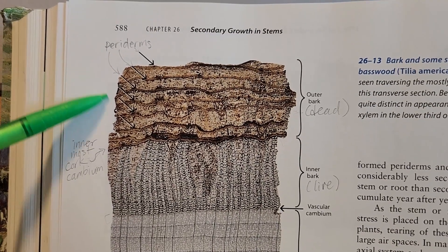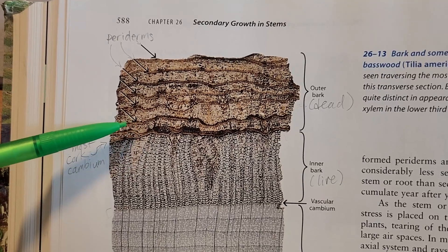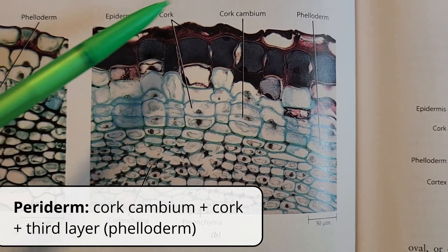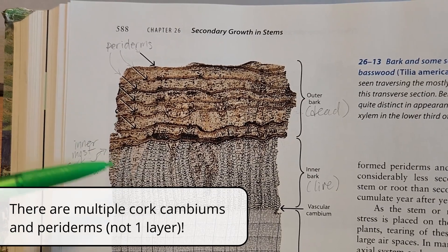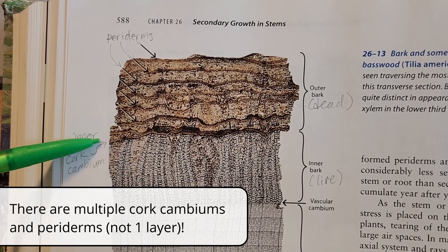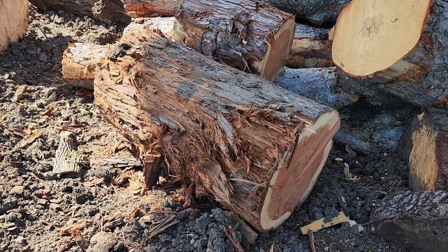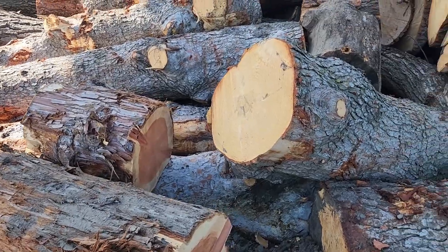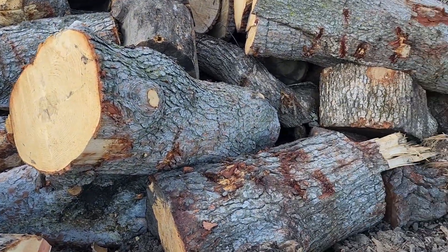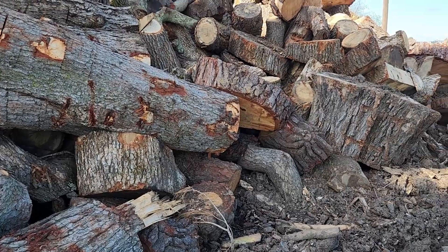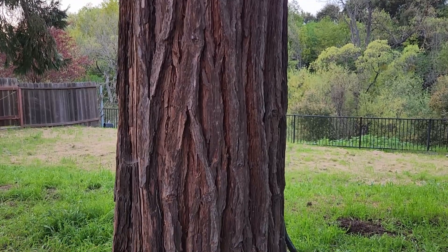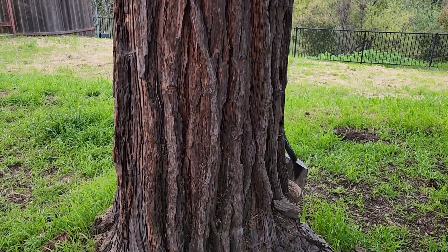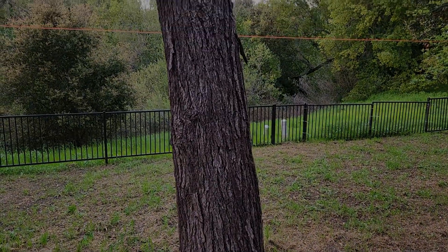A tree can have multiple cork cambiums, but only the innermost cork cambium is alive. A single cork cambium, the cork layers it makes, and some other layers make up what's called a periderm. So you will also have multiple periderms, each of which have formed from a separate cork cambium. The texture of the surface of the bark is determined by how the individual periderms are laid down — if they're laid down in overlapping layers, you get more of a scaly or flaky appearance. Bark appearance can be consistent within a species, so it can be useful for identifying trees in general or deciduous trees in winter.